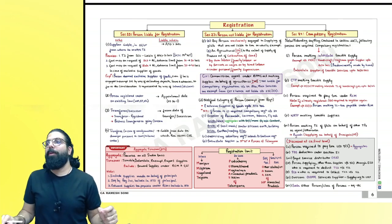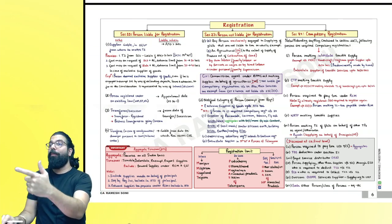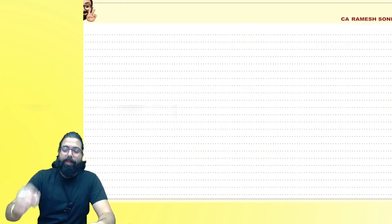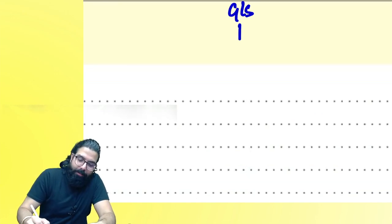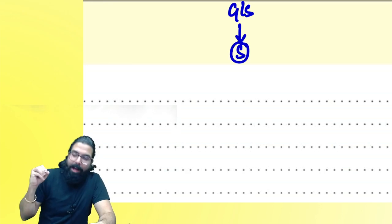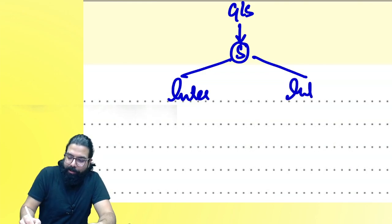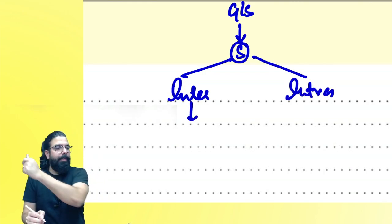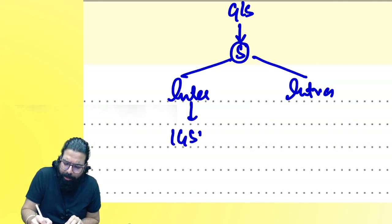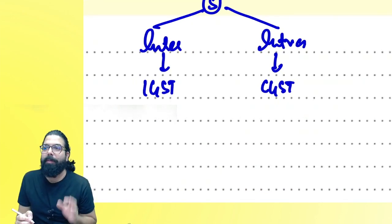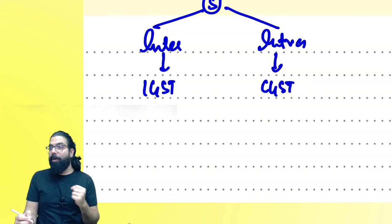The next chapter we are going to revise is the chapter of registrations. Let's do a quick linking first. We started learning GST with goods or service — whenever goods or services will be supplied. Supply can be either interstate or intrastate. For interstate supply, IGST will be levied; for intrastate, CGST will be levied. SGST is not a part of the syllabus.